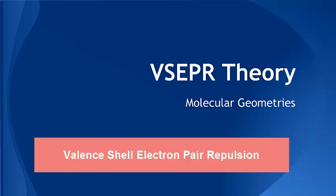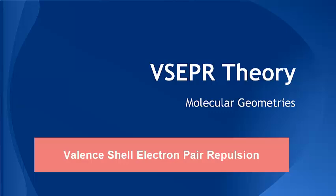VSEPR stands for valence shell electron pair repulsion. The learning objectives for this video are listed here. I want you to take a second, pause the video, and write them down. Then restart the video once you've done that, so you know what we'll be doing.